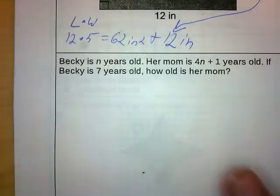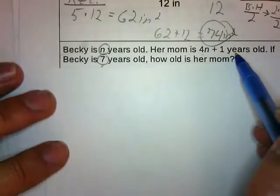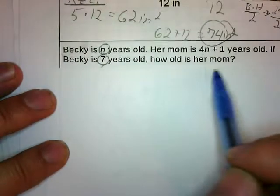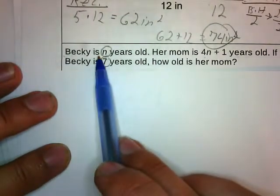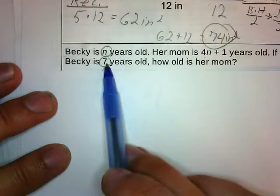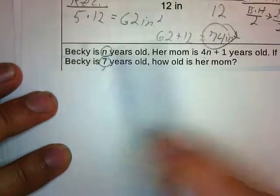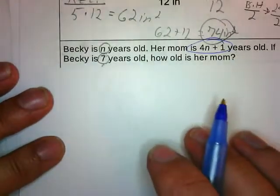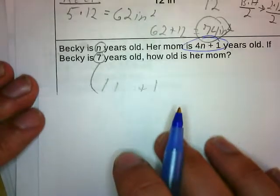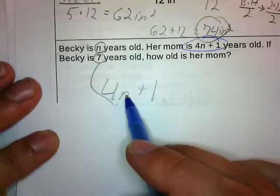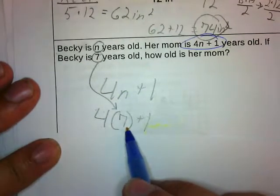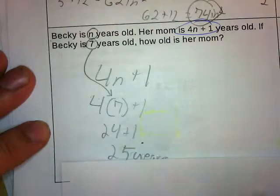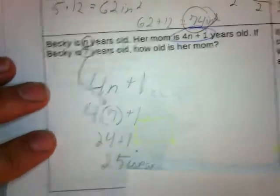Becky is n years old and her mom is 4n plus 1 years old. If Becky is 7 years old, how old is her mom? We know that Becky is n years old and it tells us n equals 7. So this is a substitution — wherever we see n, we put a 7. We rewrite the expression, substitute 7 in place of n, work out the problem, and we come up with 29 years.